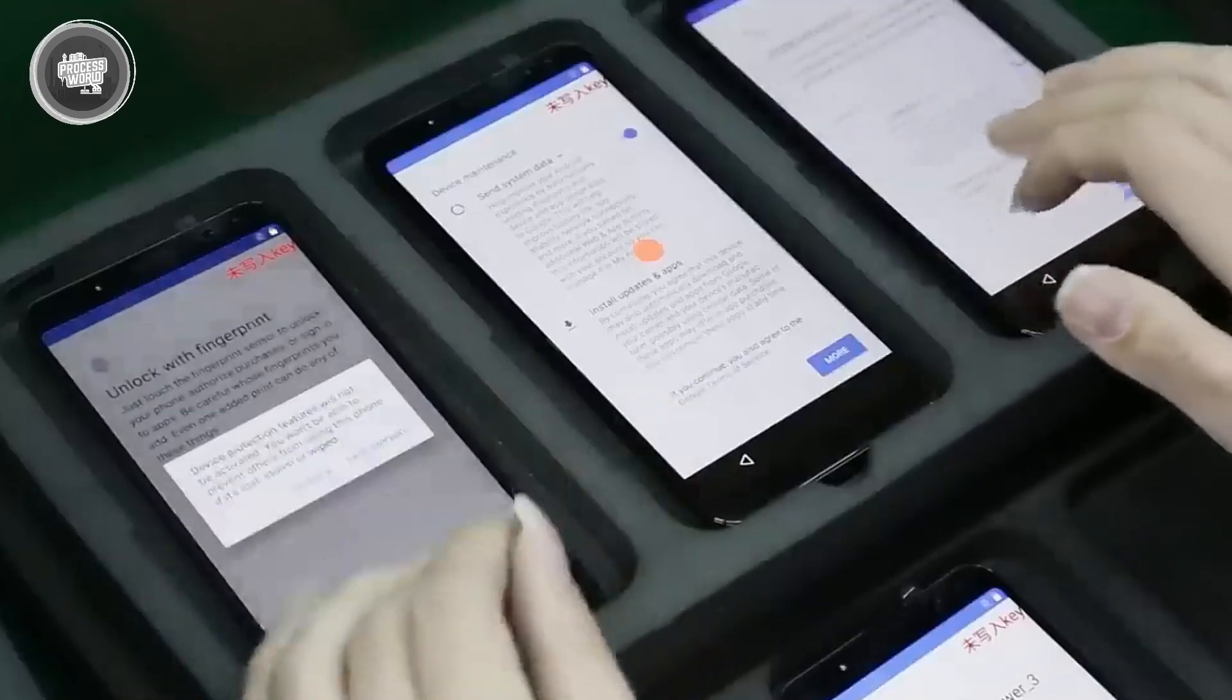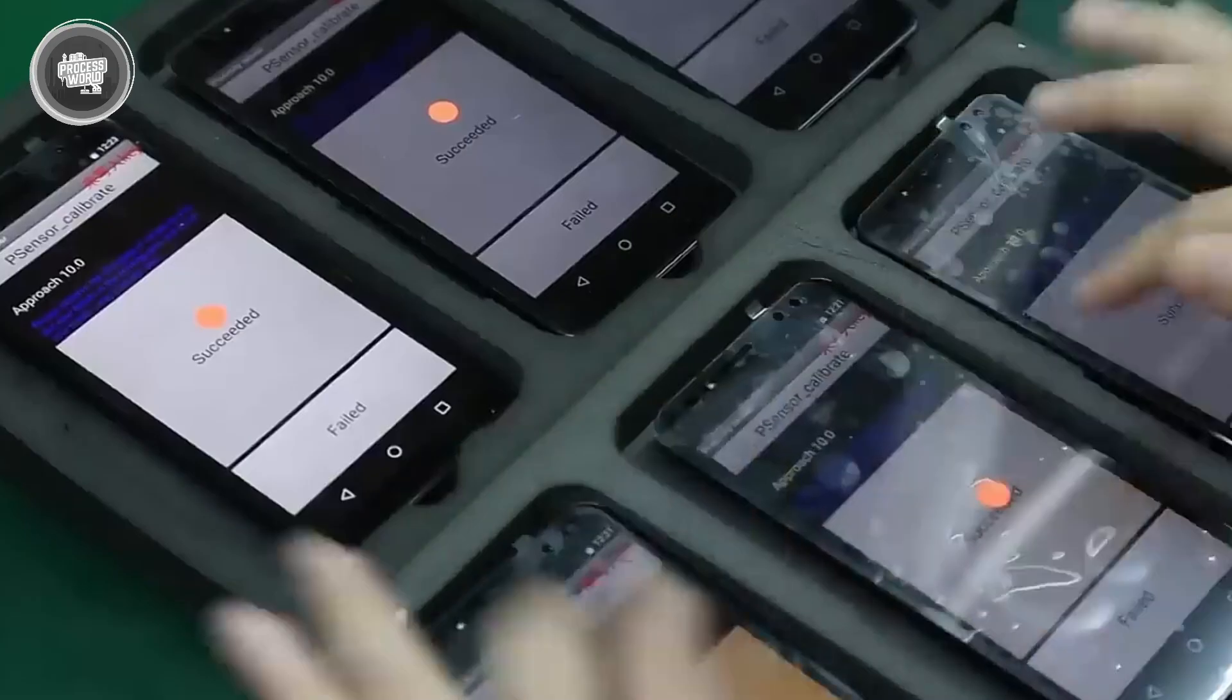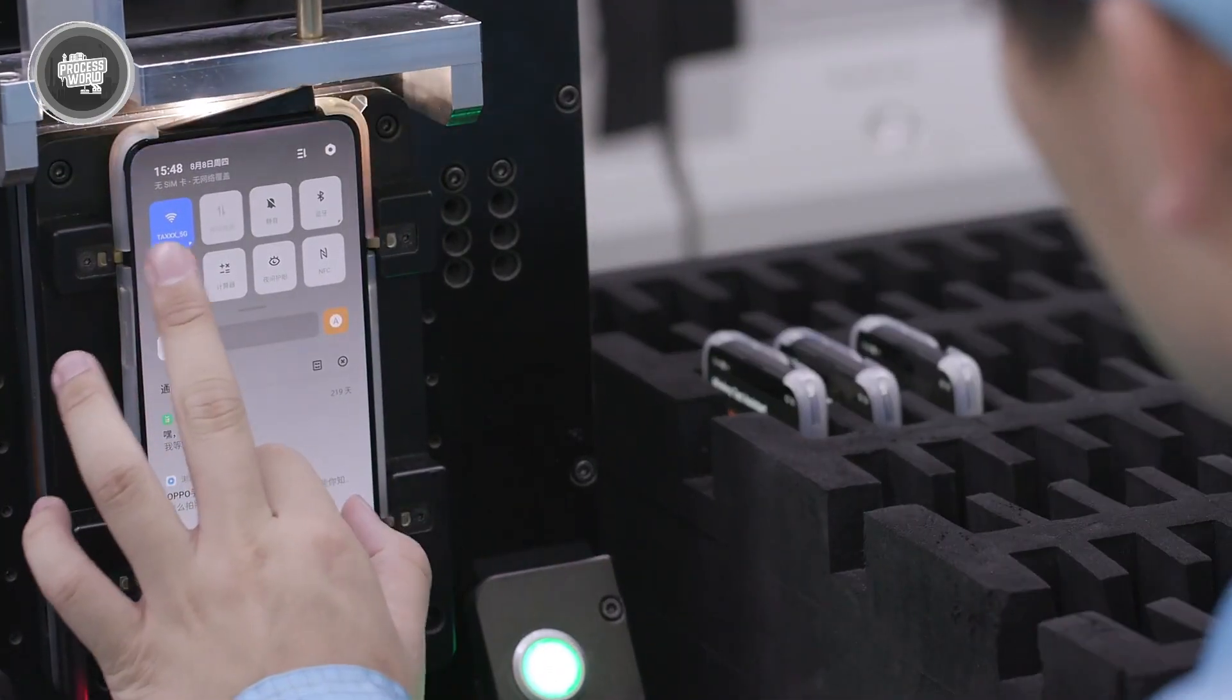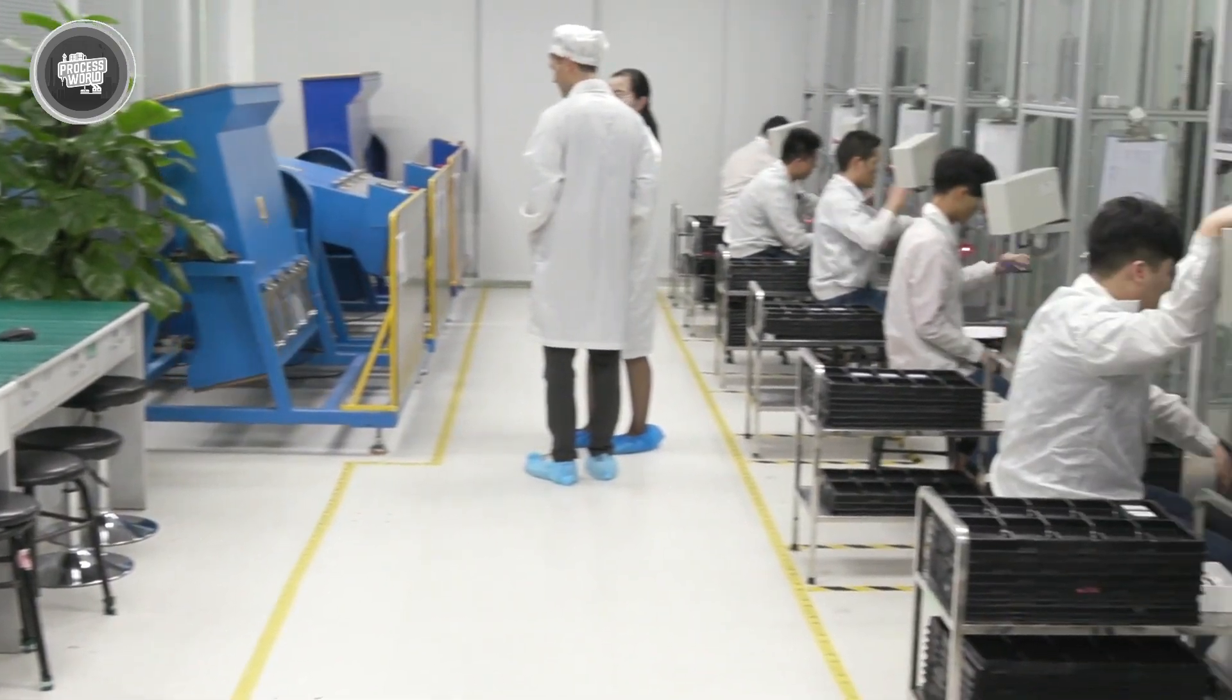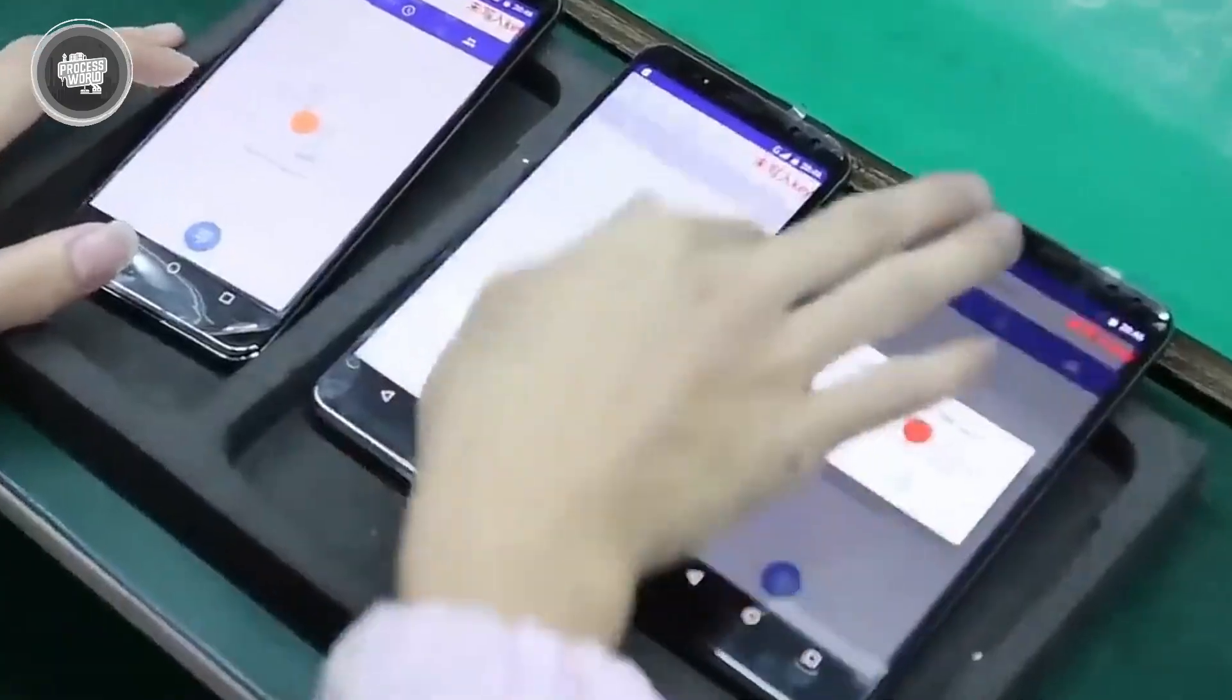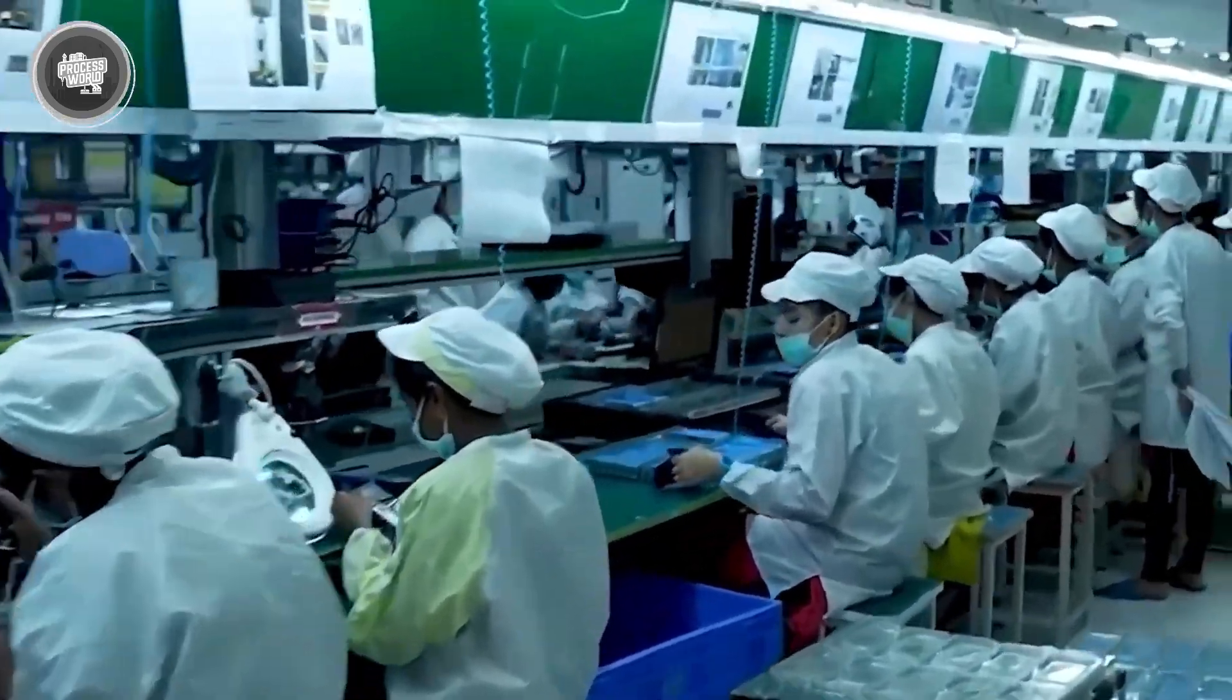Then comes the connectivity testing. Wi-Fi, Bluetooth, NFC, and cellular antennas are all activated to check if they can send and receive signals properly. Some phones are placed in shielded environments to verify that signal strength meets Samsung's standards. Finally, a few units from each batch are handed over to human inspectors for a last visual check. They're examined for scratches, gaps in the casing, or anything that might have slipped through earlier. If even one thing is off, the unit is pulled for rework or scrapped entirely. Every Galaxy phone you've ever held has passed through this entire process. It's how Samsung avoids mass defects and keeps the experience consistent from one user to the next.